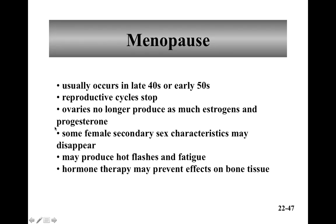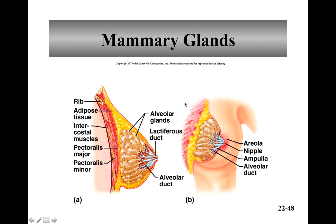Menopause usually occurs in the 40s or 50s — that's when the reproductive cycle stops. Perimenopause is when it's disrupted. The ovaries aren't going to produce their hormones anymore or release oocytes anymore. There is hormone therapy to help with the effects on bone tissue, but that could also have unwanted effects and has sometimes been associated with cancer.